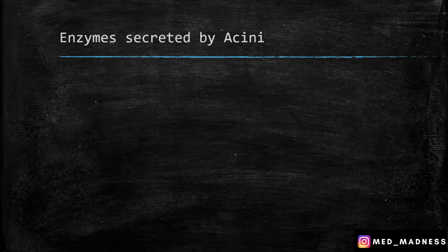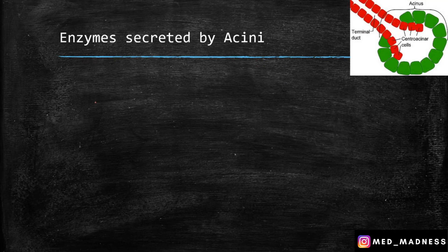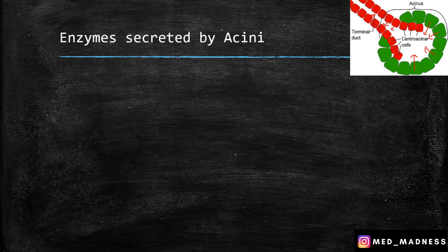What are all the enzymes secreted by the acini? Remember, this is the acinus — a single acinus. These are all the cells that are going to secrete digestive enzymes. And remember, the ductal cells here are also very important for secretion of bicarbonate.